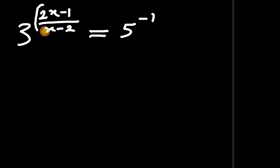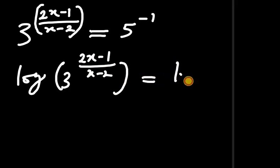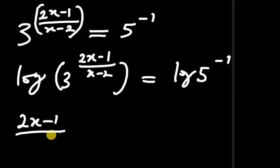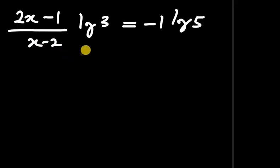To solve for (2x−1)/(x−2), we introduce logarithms. Taking the log of both sides: log of 3 to the power of (2x−1)/(x−2) equals log of 5 to the power of negative 1. By the logarithm power rule, this becomes (2x−1)/(x−2) times log 3, equals negative 1 times log 5.